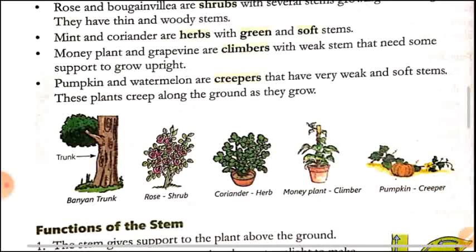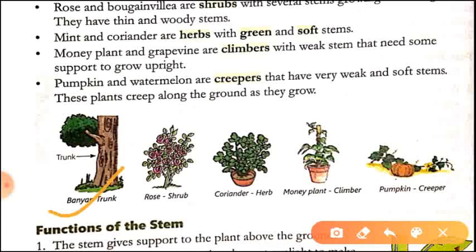Here you can see this is a banyan tree trunk — it is very woody, thick and hard. If we talk about a shrub like rose, you can see many branches arising from the ground. This is coriander — it is a herb and you can see the stem is very soft. Here you can see the stem is weak so support is needed for them to grow upright.